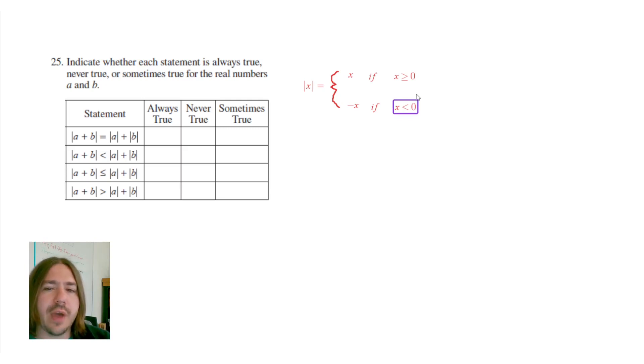So the first one says if you add two numbers, so let's say 2 plus 3, the absolute value of 2 plus 3. We'll do 2 plus 3, and then we'll do a couple of other examples here with different negatives.